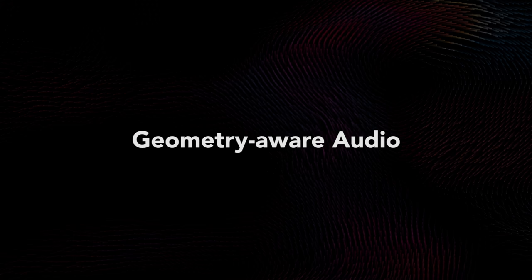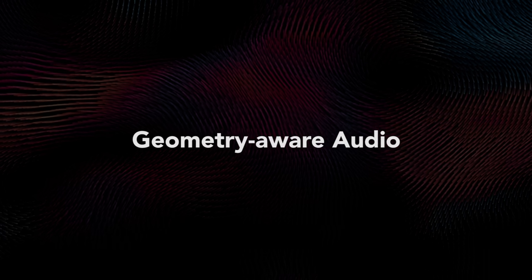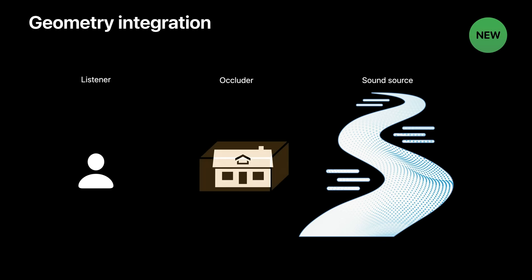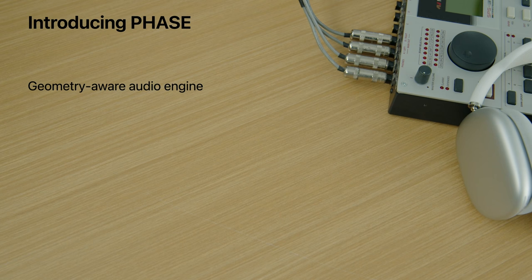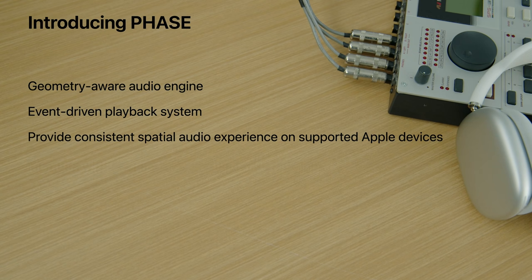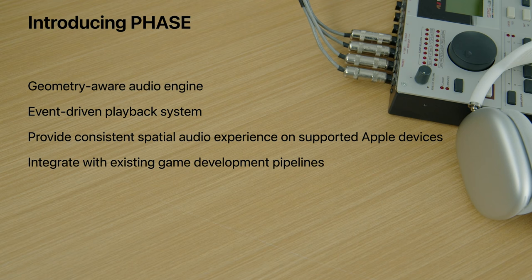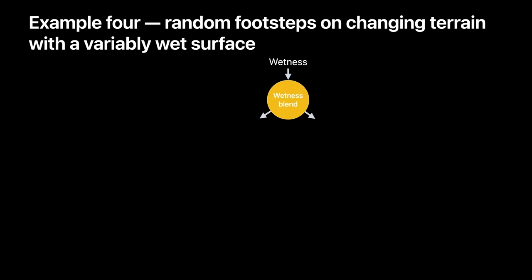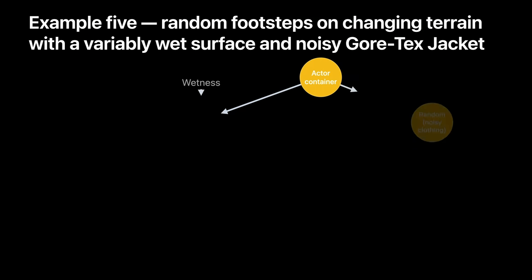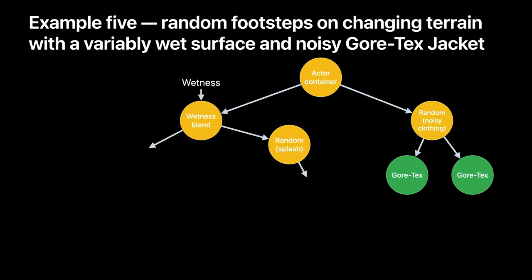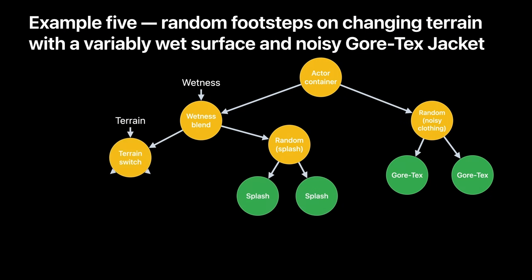A key part of gaming is the audio — just like films, it can make or break the gaming experience. A technique to help with audio is geometry-aware audio, to enhance complex, interactive, and immersive audio scenes for games. Apple has put together a new API for spatial audio that they are calling the Physical Audio Spatialization Engine. This API allows developers to keep sounds aligned to the core experience throughout your gameplay session, and helps to create spatial soundscapes and scenes during the development process instead of during post-production.